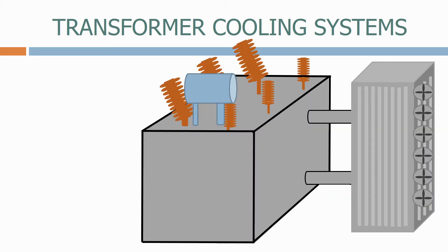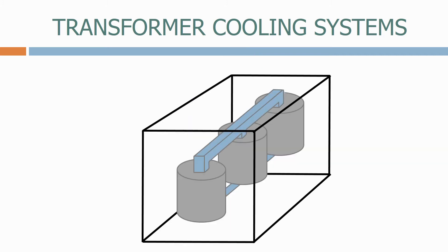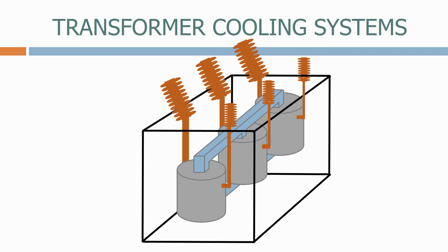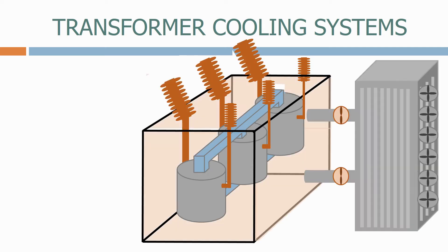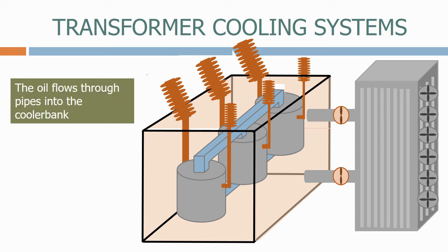Here is our transmission level transformer from before with a tank and an external cooler bank. Let's look inside the transformer. Here we have the core and windings. We then have the low voltage bushings and the high voltage bushings. We have the mineral oil, which flows through pipes into the cooler bank.